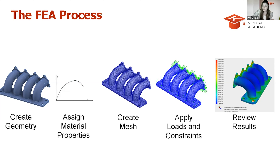FEA reduces the need for physical prototypes and physical testing, allows for less errors, and saves time. It is a computerized method for predicting how a product will react to real-world forces, vibration, heat, fluid flow, and other physical effects. It breaks a real object into a large number of finite elements, such as little cubes, which have a mathematically defined relationship between force and displacement, used to forecast the behavior of each element. The computer totals the individual behaviors to predict the performance of the object itself.